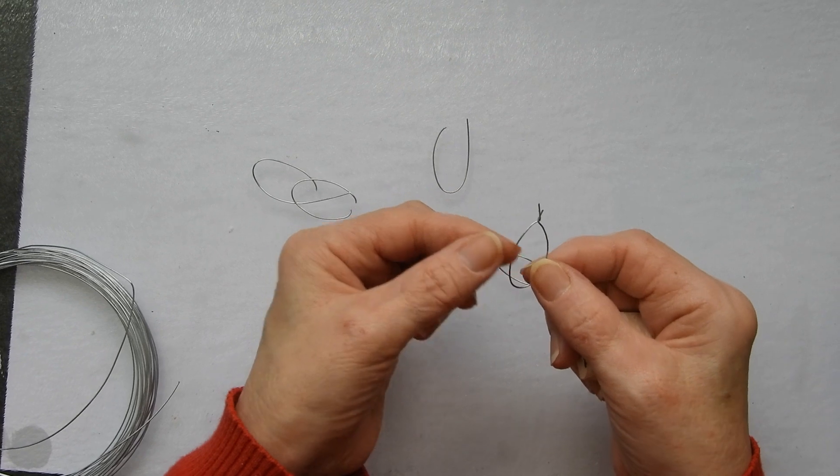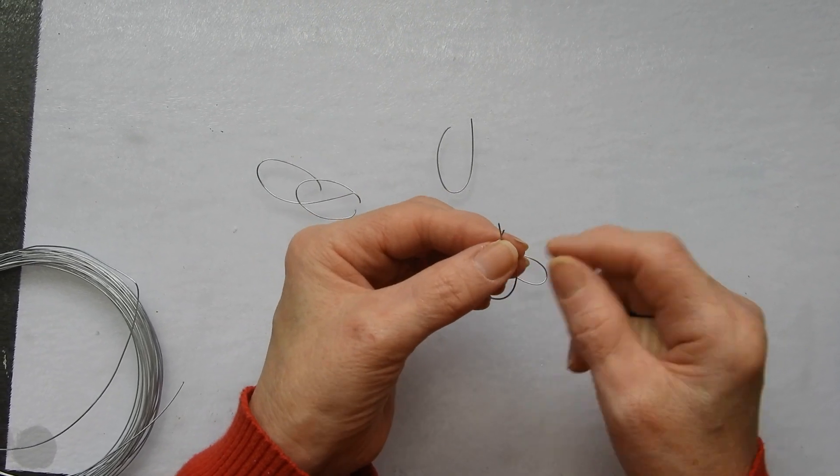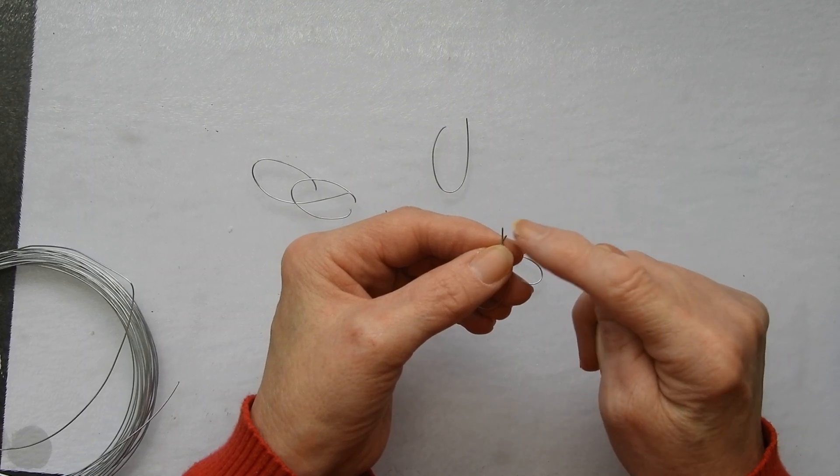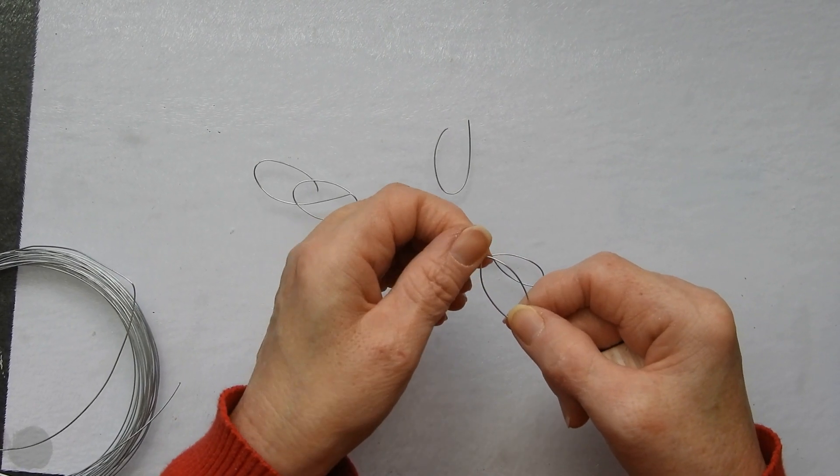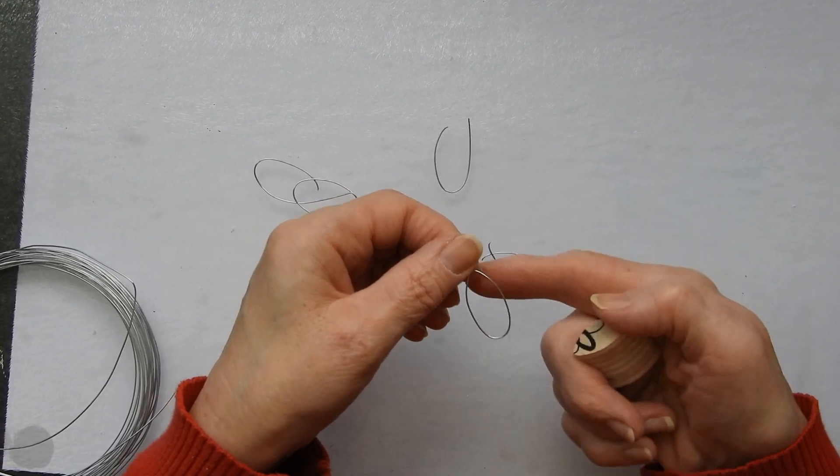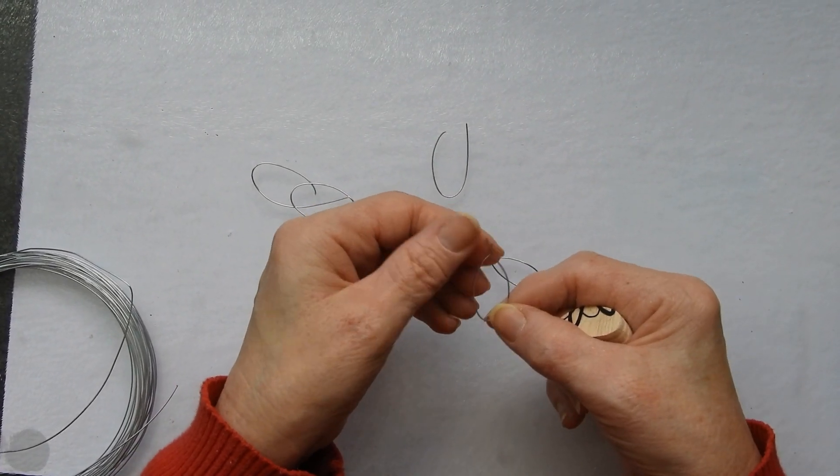Now that is basically all that a bezel is. You can, if you want to make it longer and you can make that into a loop at the top, or you can do what a lot of people do, and you can attach the jewelry finding to the back of the pendant anyway.